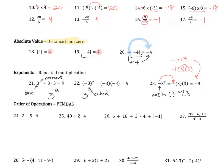Going back briefly to the absolute value example — something very similar is happening: we can think of that negative as a negative 1 being multiplied to the absolute value of negative 4. That concludes the first part of the notes for assignment one in ABS. A video should pop up on the screen now that will lead you to the second portion of notes covering the order of operations.